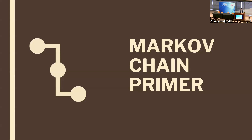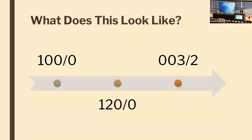Markov chains are going to be a recurring topic today, so I wanted to give a primer so everyone's on the same page. Essentially, a Markov chain allows us to look at a system at a current place in time and calculate the probability of moving to a new state. In baseball, we define a state as the position of runners on base as well as the number of outs.